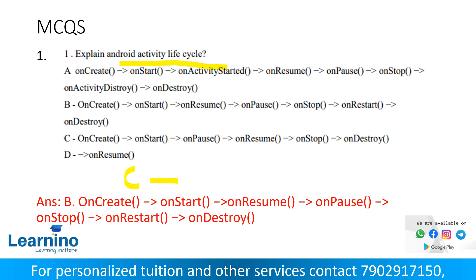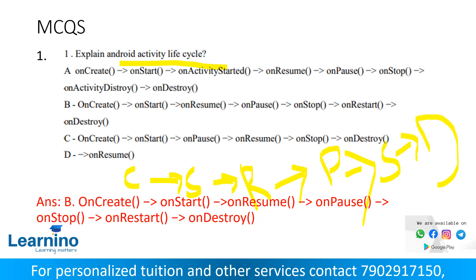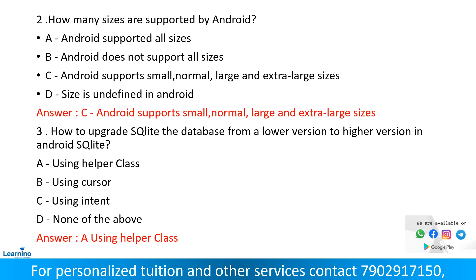The Android Activity Life Cycle states are: Create, Start, Resume, Pause, Stop, Restart, and Destroy.